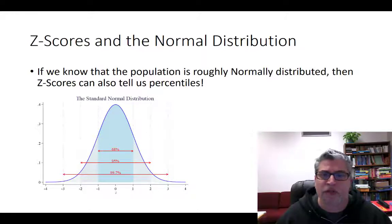But, if you know that the distribution that you're looking at is roughly normally distributed, then you can use the empirical rule to kind of ballpark what those percentiles would be.